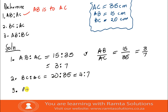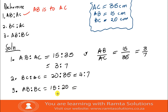Number three: AB is to BC. AB is 15 and BC is 20. Pressing 15 over 20 on your calculator returns 3 over 4. So AB : BC = 3 : 4.